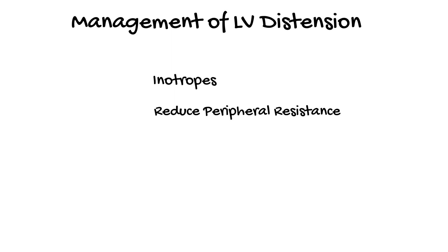Management of left ventricular distension involves increasing left ventricular ejection with inotropes, reducing peripheral resistance and lowering mean arterial pressure targets, and fluid removal to reduce the mean systemic filling pressure. If these interventions don't work, the left ventricle needs to be decompressed.